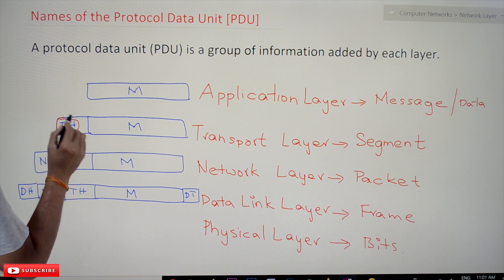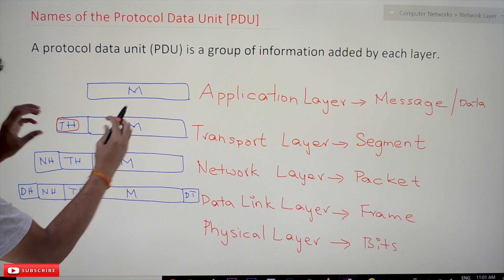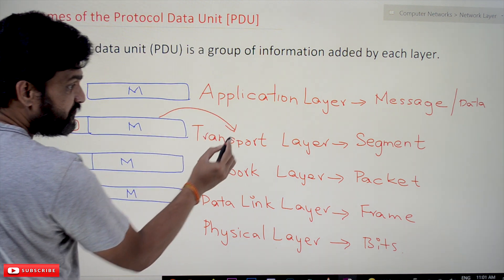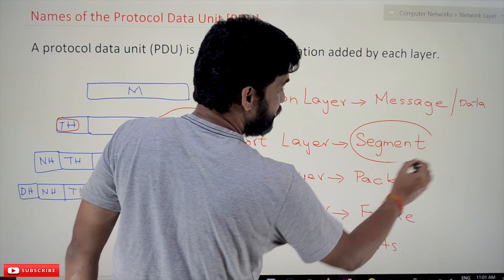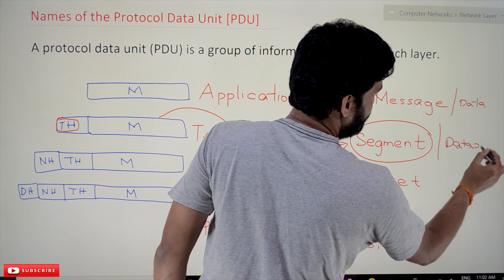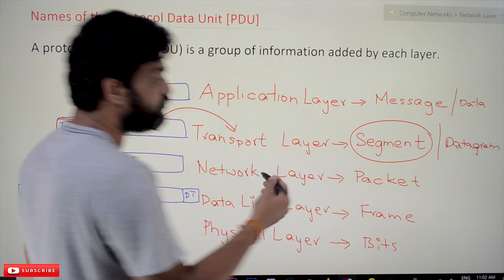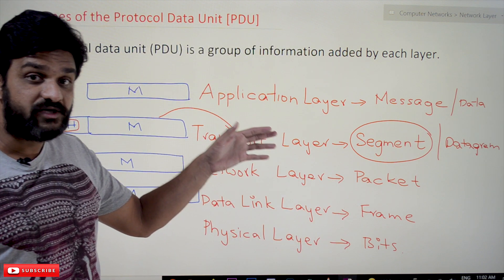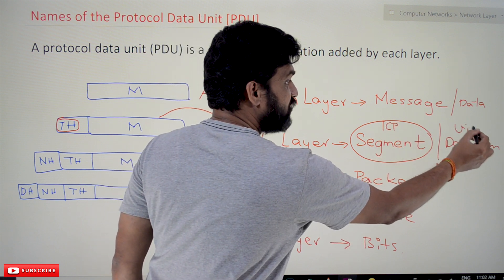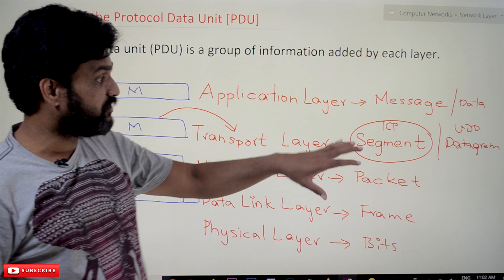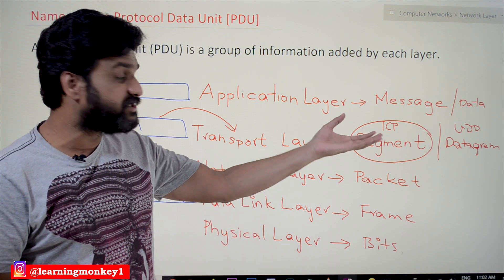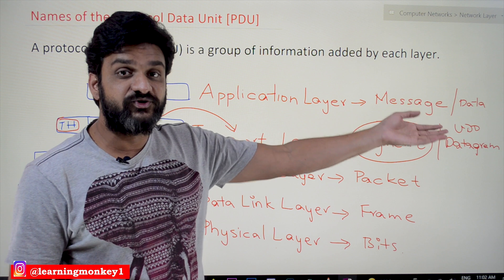This message will be forwarded to the transport layer, and to this message the transport header will get added. The combination of this message and the transport header is the PDU of the transport layer, which is called a segment — or also called a datagram. It depends on the protocol being used in the transport layer: if it is TCP, it is called a segment; if it is UDP, it is called a datagram.